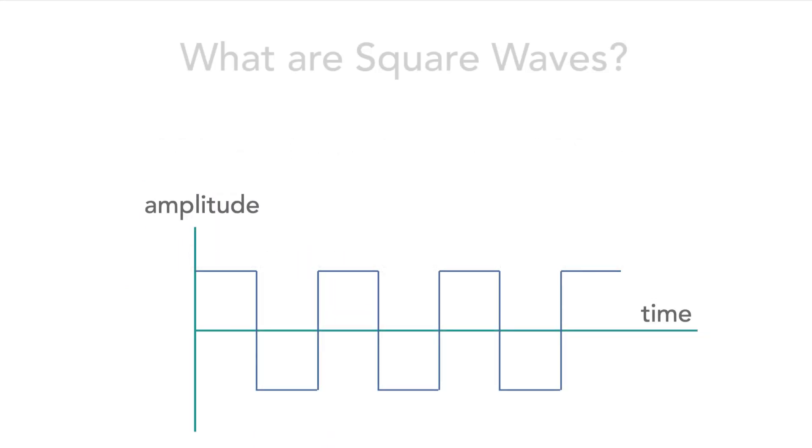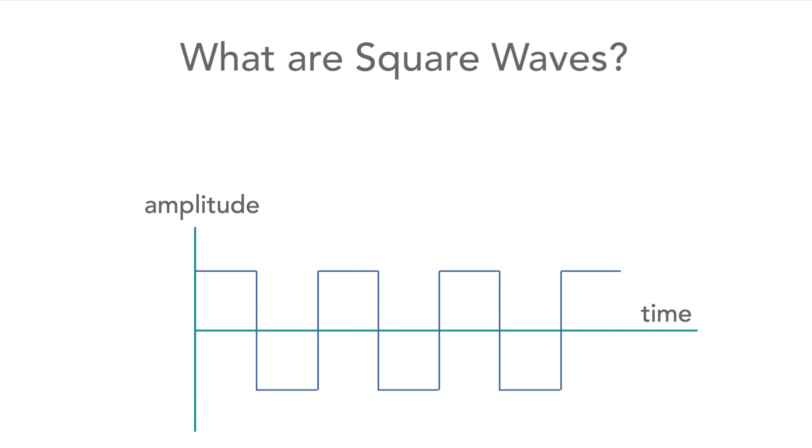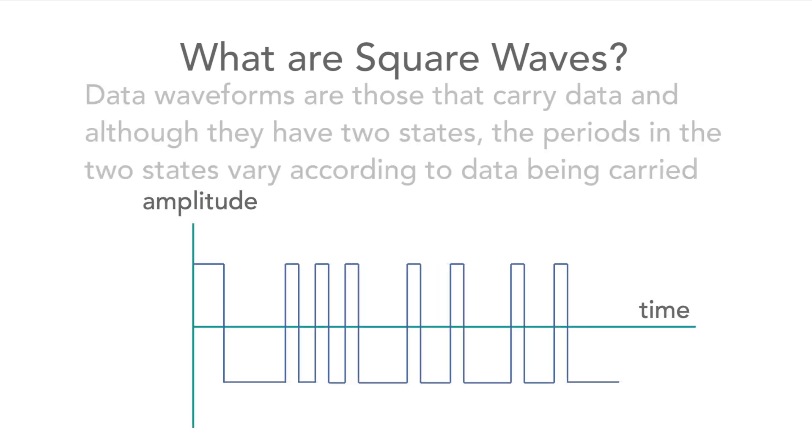Square waves are seen in very many electronic circuits. Although the term square wave describes a very specific waveform, they can be considered as part of a more generic waveform called a rectangular waveform or even a digital waveform.